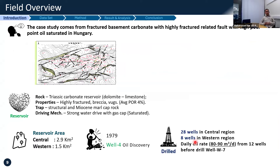Here is an example from Hungary — a fractured basement carbonate. It is really highly fractured and fault-related. The complexity is not only in the rocks but also in the oil itself. The rock is coming from Triassic carbonate, mostly dolomite and limestone combinations, with highly fractured breccia and also vugs. The average porosity, which is quite unconventional, is only around 4%, but the permeability is really high — up to 1 Darcy or 40,000 millidarcy.